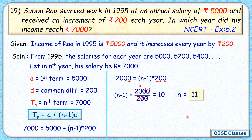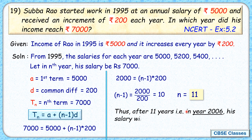Now, students usually lose marks when they stop here and say N = 11 is the answer. Of course we have to check what is asked — the question asks in which year did his income reach Rs. 7,000. We need to state the year. Many write 'after 11 years' or 'in year 2006,' but that statement is wrong. N = 11 refers to the 11th term, not after 11 years.